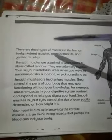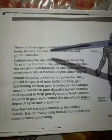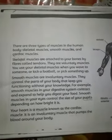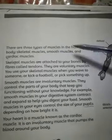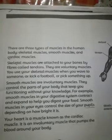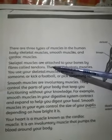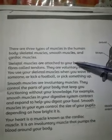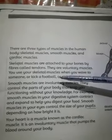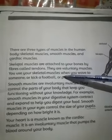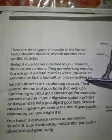Next is page number 9. There are 3 types of muscles in the human body. First is skeletal muscles, second is smooth muscles, and third is cardiac muscles. Skeletal muscles are attached to your bones by fibers called tendons. They are voluntary muscles. You use your skeletal muscles when you wave to someone, kick a football, or pick something up.